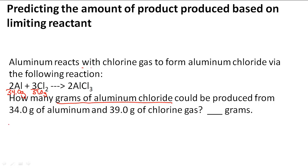First, I'm going to figure out the moles of Al. So 34.0 grams of Al divided by its molar mass, 26.98 grams per mole, gives us 1.2602 moles of Al.